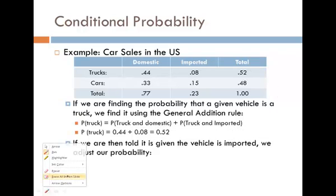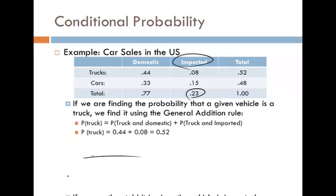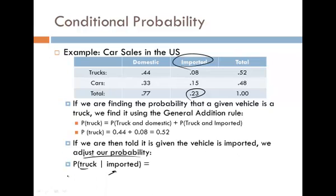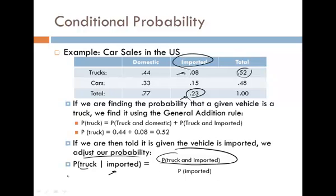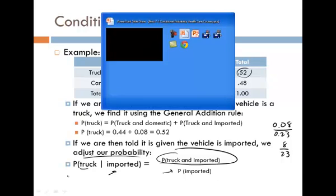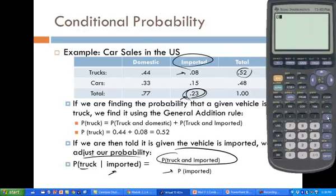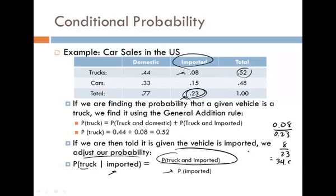If we're told that the given vehicle is imported, we adjust our probability. Given that it's imported, what's the probability that it's a truck? We're now looking at the total percentage of imported vehicles. Using the conditional probability rule: the probability of an imported truck (8%) divided by the probability of all imported vehicles (23%) gives us 8 out of 23, which is approximately 34.8%, or about 35%.